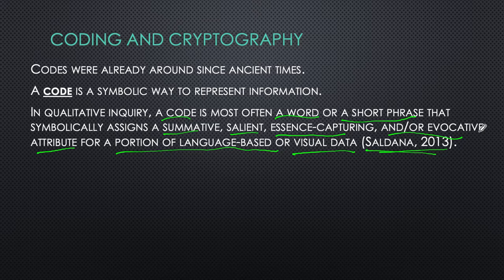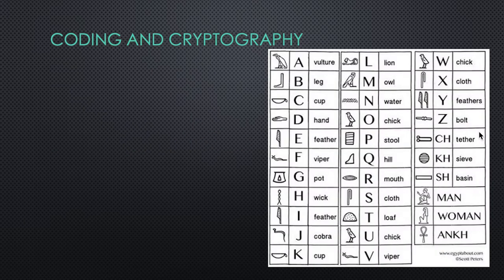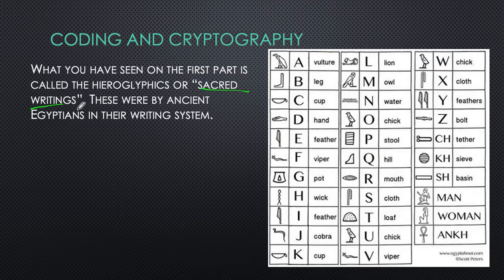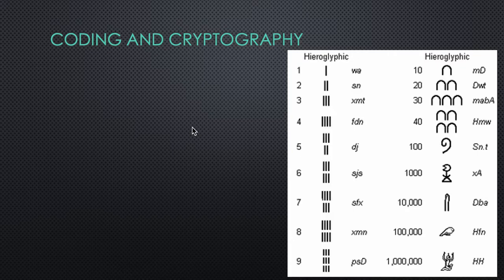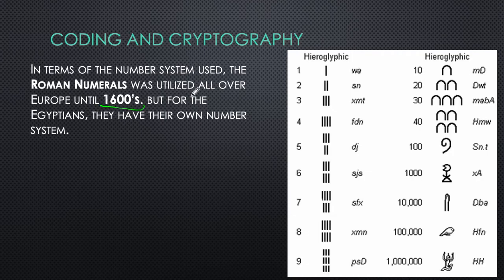That definition is taken from Saldana's book in 2013. Take a look at these symbols — they are quite familiar. What you are seeing in this first part is what we call hieroglyphics, or the sacred writings, first used by ancient Egyptians in their writing system. Egyptians not only devised hieroglyphics as a writing system, but also a numeral system. In terms of number systems, Roman numerals were used all over Europe until the 1600s, until Fibonacci introduced the Hindu-Arabic numerals.